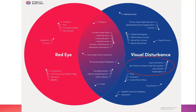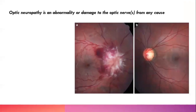They're not rare either. In an eye clinic we'll see these every week, probably one or two cases, and you'll also see them in emergency and as GPs. An optic neuropathy is any abnormality or damage to the optic nerves from any cause. Today we'll talk about some of the more common ones.